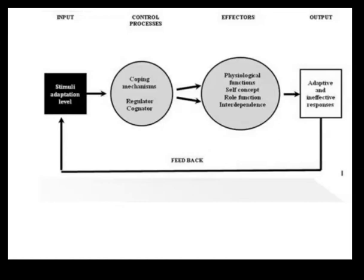The coping mechanisms lead to effectors in four interdependent modes: physiological functions, self-concept, role function, and interdependence. With the help of these effectors we can see an output — either adaptive or ineffective responses. Whether the response is adaptive or ineffective, a feedback loop leads back again to the stimuli.